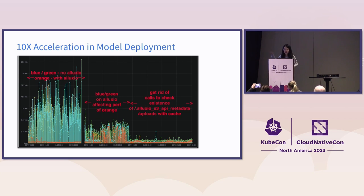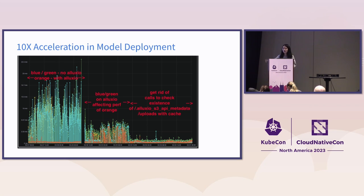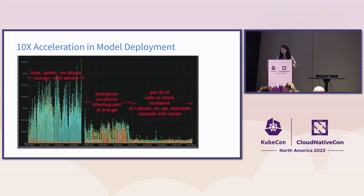One graph shared by our users shows how long it takes to deploy their model — the higher the number, the longer the deployment time. The blue and green bars on the left show deployment time with no caching solution, always fetching from the storage system. The middle section shows that when they first onboard a caching solution, deployment time is immediately reduced to a fraction. The right part shows that after co-optimization with their workloads, it only takes about one tenth of the original model deployment time.